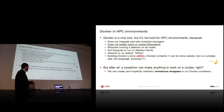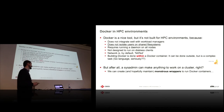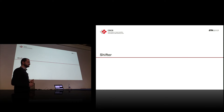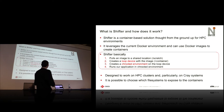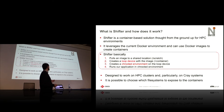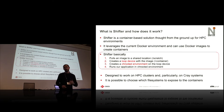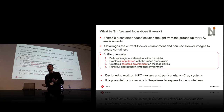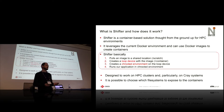Instead of continuing down the path of writing wrappers, which is a lot of effort, we want to look at something called Shifter. Shifter is a container-based solution designed from the ground up with HPC environments in mind, in particular Cray systems. One of the nice features is that it leverages the current Docker ecosystem by being able to pull images from Docker Hub. So if you have your image, you just pull it and you can use it with Shifter.